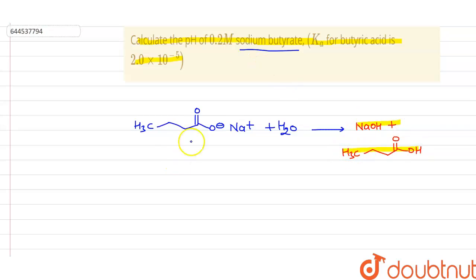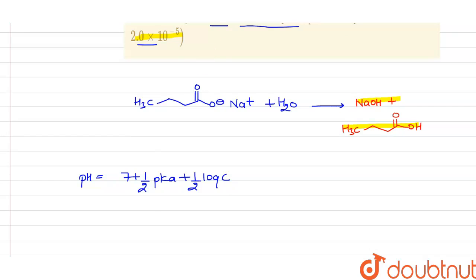Now what happens? There is a formula which relates the relationship between the concentration as well as the Ka. The formula for the pH of the salt of the strong base and weak acid will be 7 plus 1 by 2 pKa plus 1 by 2 log C, where C is the concentration of the salt and pKa is defined as minus log Ka.